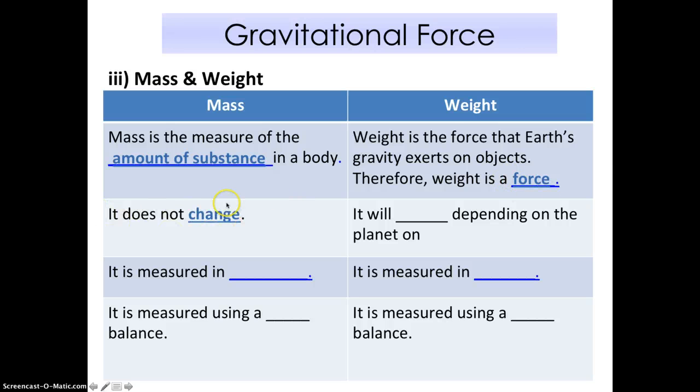So for mass, it doesn't change. Whether you're on Earth, when you go to the Moon, if you have a mass of 60 kg on Earth, and you go to the Moon, you'll still be 60 kg. But as for weight, it will change depending on the planet you're on. So let's say you're on Earth, you have probably 600 Newtons, but on the Moon, you might only weigh 100 Newtons. So you will change. So yes, you've heard me say, mass, it measures in kg. For weights, we measure in Newtons.